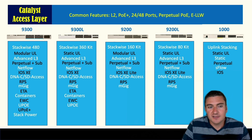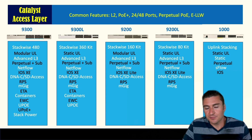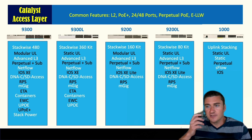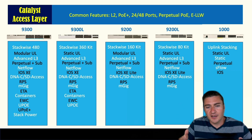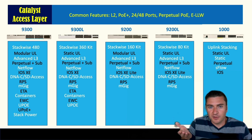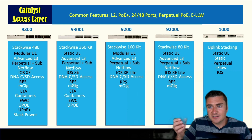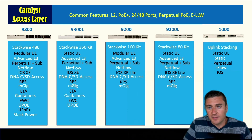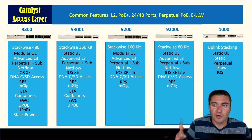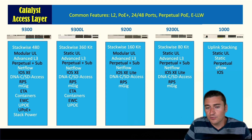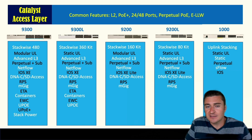Stack power is another 9300-exclusive feature — not available on the 9300L. If you have a stack of three switches and one power supply fails in the bottom switch, that switch can stay up by drawing power from the other switches in the stack and their redundant power supplies. It's a great feature for anyone who needs the access layer up 100% of the time.